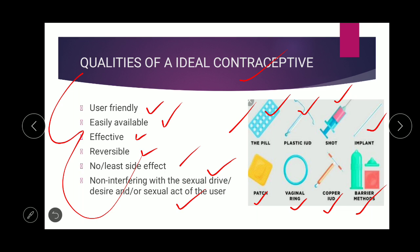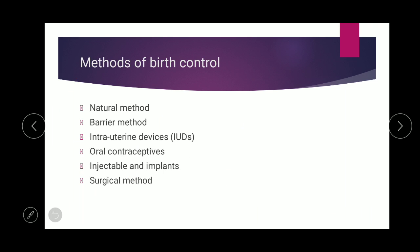Various examples of contraceptives include the pill, plastic IUD, injections, implants, patches, vaginal rings, copper IUDs, and barrier methods. Methods of birth control are categorized as: natural methods (no medicines or equipment), barrier methods (prevent sperm-ovum contact), intrauterine devices (inserted inside the uterus), oral contraceptives (ingested through mouth), injectables and implants, and surgical methods.